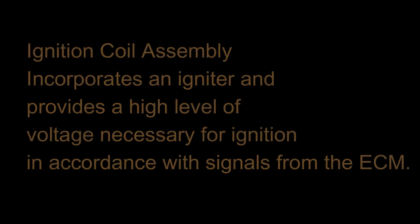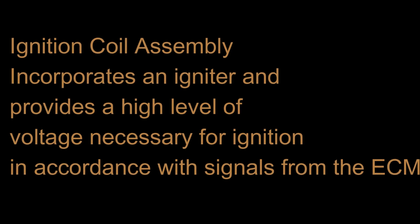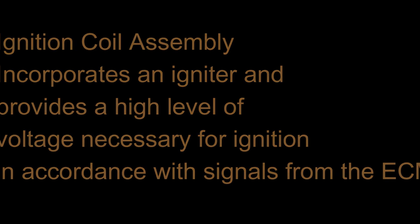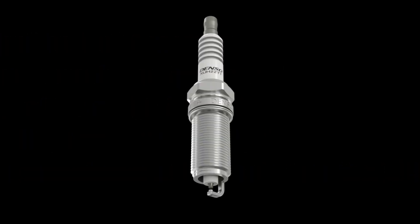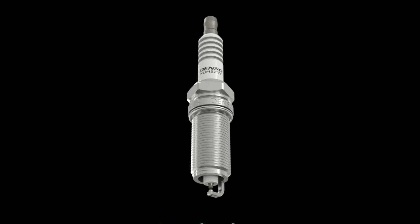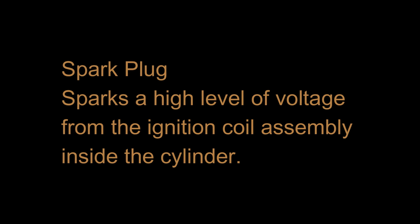Ignition coil assembly incorporates an igniter and provides a high level of voltage necessary for ignition in accordance with signals from the ECM. Spark plug delivers a high level of voltage from the ignition coil assembly to ignite the mixture inside the cylinder.